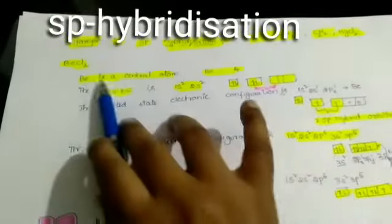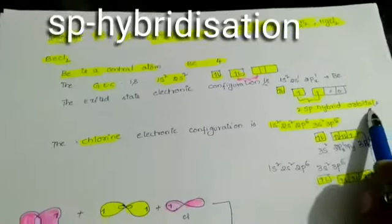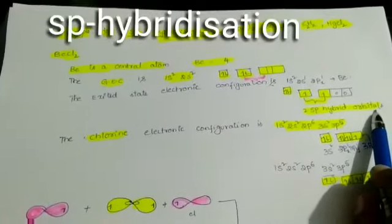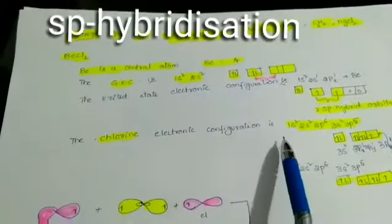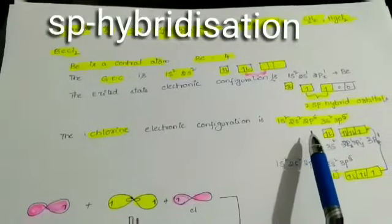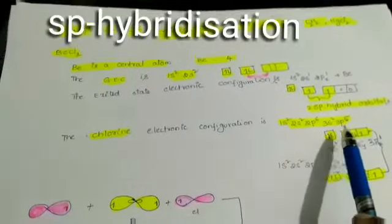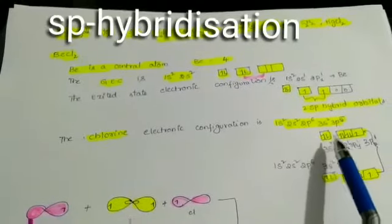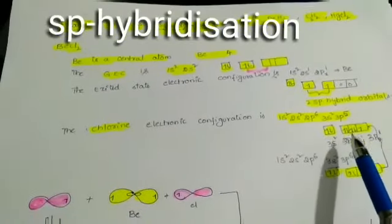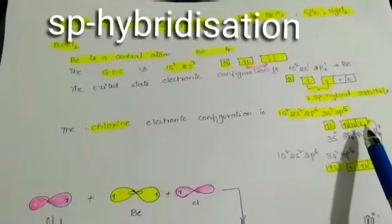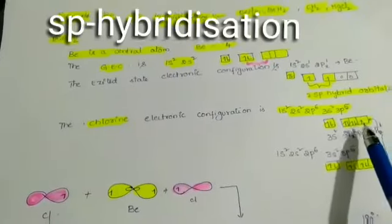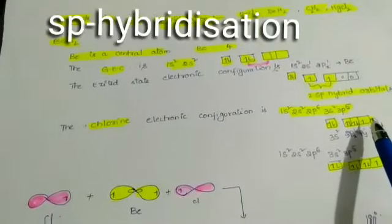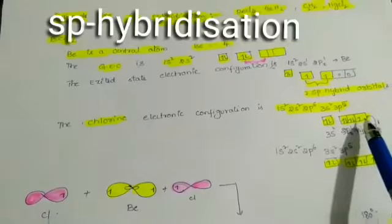The beryllium atom exhibits 2 SP hybrid orbitals and undergoes SP hybridization. The surrounding chlorine atom has the electronic configuration 1s², 2s², 2p⁶, 3s², 3p⁵. In 3p⁵, there is 1 unpaired electron.